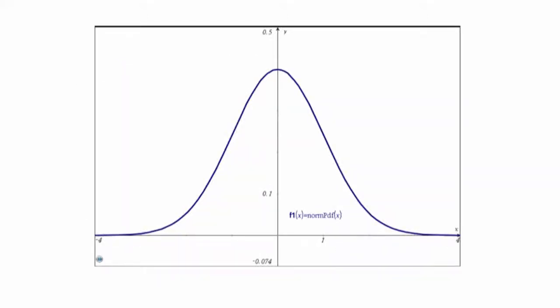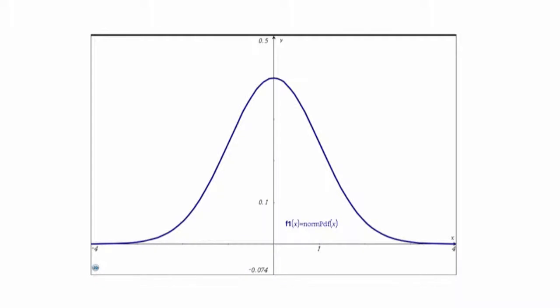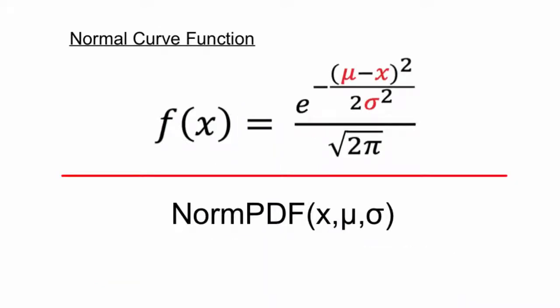What norm pdf does, basically, is it draws a picture of the normal curve on a standard xy axis. The original formula is kind of big — it involves e, the natural number, and you have to put in your mean, standard deviation, pi, and square roots. Tracing out this curve is kind of cool, but it's really complicated. Norm pdf is a function that'll do everything. You just put in your mean and your standard deviation, and you can put in your x value, or put in x and it will graph it.